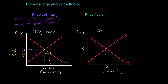What about the quantity supplied, however? We know that the law of supply says there is a direct relationship between a good's price and the quantity supplied. In other words, a decrease in the price — a legal decrease established by government — is going to lead to a decrease in the quantity supplied. We move along the supply curve for baby formula. This results in a quantity supplied that is less than the original equilibrium quantity. So now we have a situation in which the quantity supplied of baby formula is less than the quantity demanded. We have a word for this in economics — it is shortage.